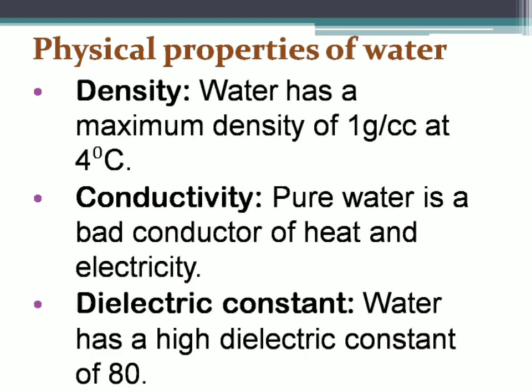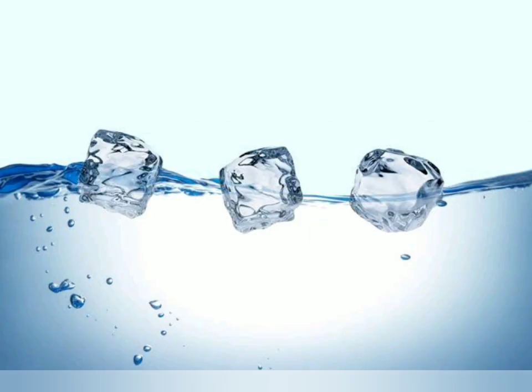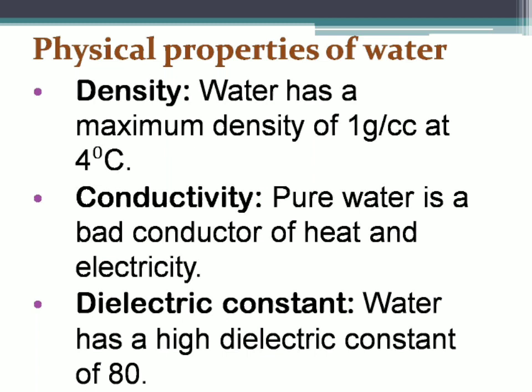If we talk about density, water behaves differently than other substances. Normally the density of substances in solid state is higher than in their liquid state, but water has maximum density of 1 gram per cubic centimeter at 4 degrees Celsius. Ice has lower density than liquid water, and for this reason ice floats on water. Pure water is also a bad conductor of heat and electricity.